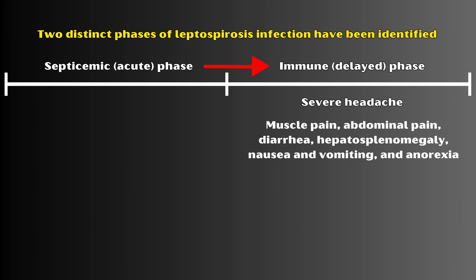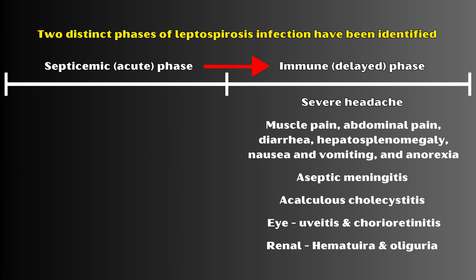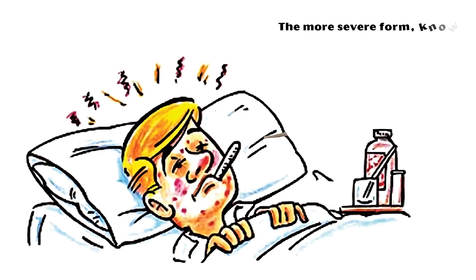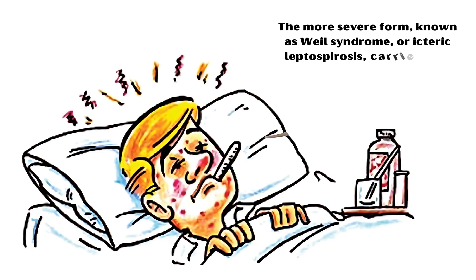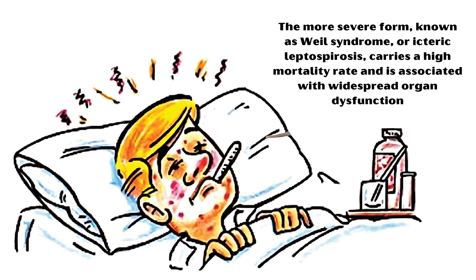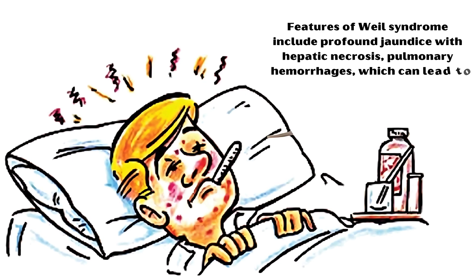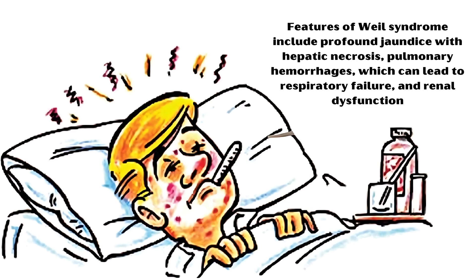The most important clinical syndrome in this phase is aseptic meningitis, where the patient has various nerve palsies, altered consciousness, and meningism. Acalculous cholecystitis is a rare but clinically significant finding. Eye manifestations such as uveitis and chorioretinitis can also occur. Renal manifestations include hematuria and oliguria. The more severe form, known as Weil's syndrome or icteric leptospirosis, carries a high mortality rate and is associated with widespread organ dysfunction, including profound jaundice with hepatic necrosis, pulmonary hemorrhages leading to respiratory failure, and renal dysfunction.